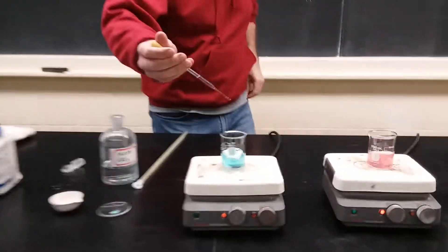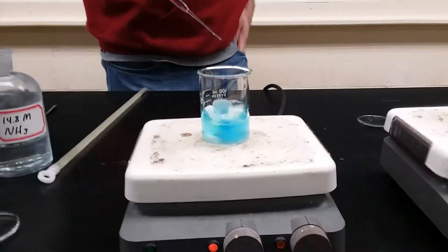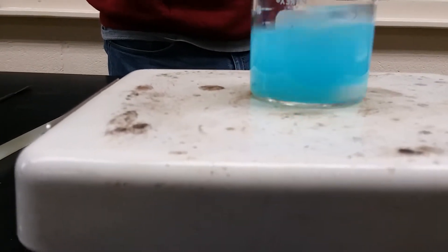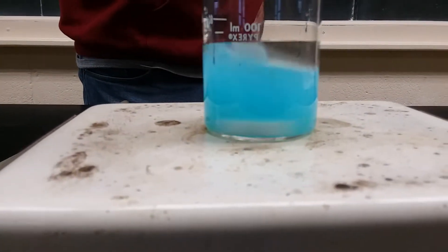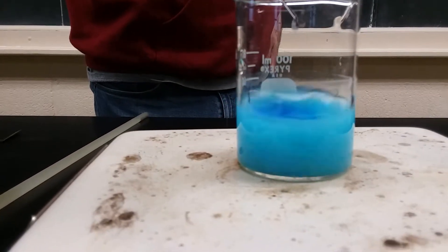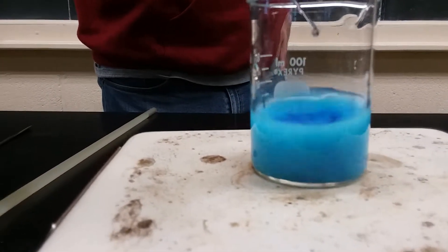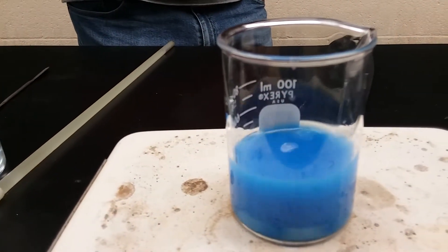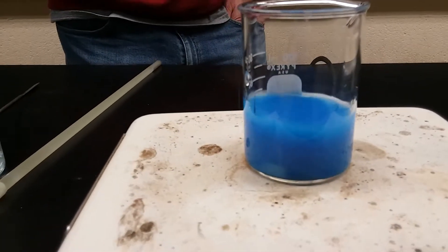So if you look at this carefully, it turns really dark blue. But then it goes back. But if I keep adding a perfect stoichiometric amount, which is of course exactly what I'm doing, we get a different color.